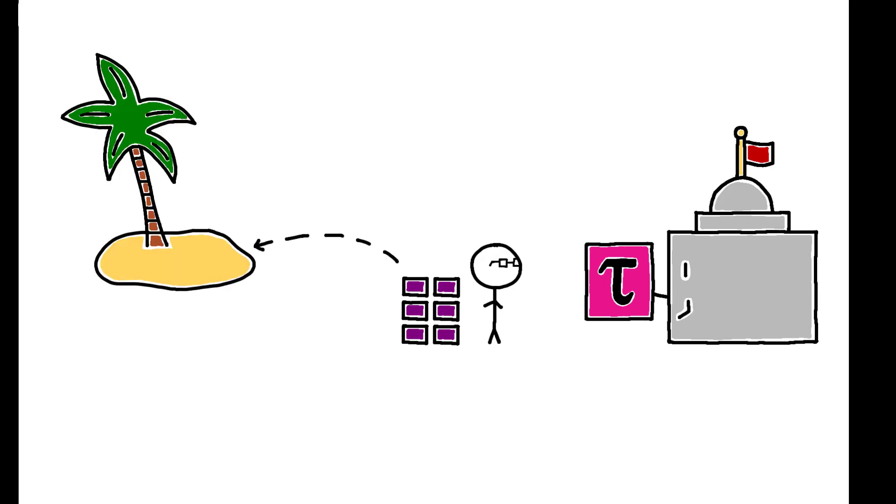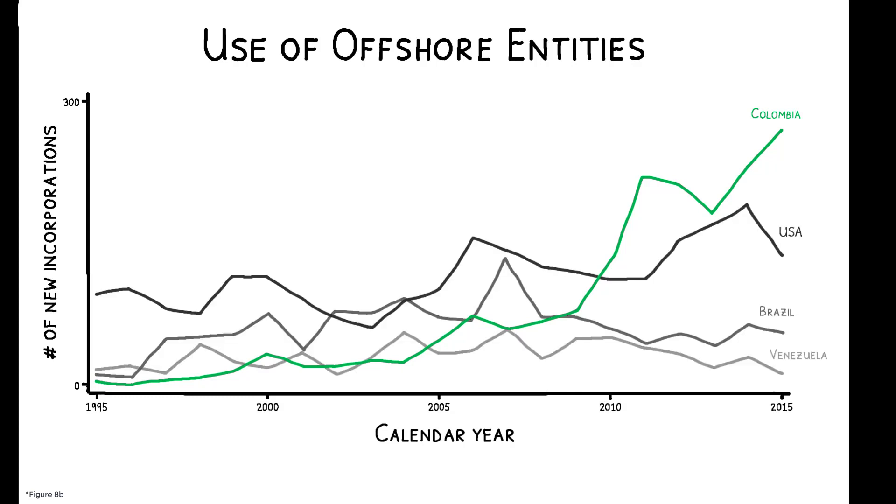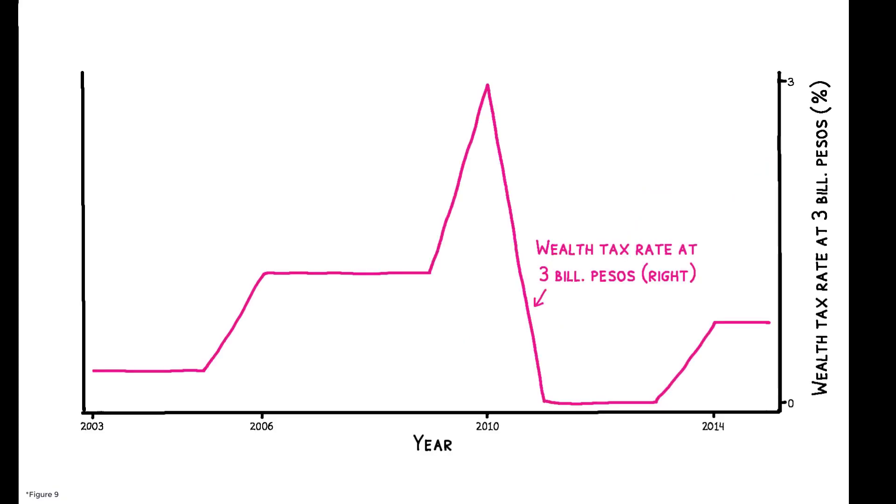In addition, the wealthiest individuals respond to taxation by hiding assets in offshore tax havens. Data from the leaked Panama Papers reveal that Colombians have created more offshore entities in recent years than wealthier or more populous countries in the Americas, and this trend mirrors the evolution of top wealth tax rates.